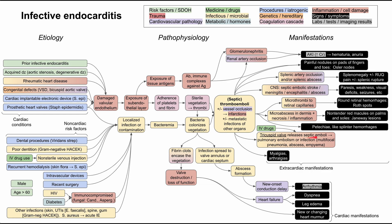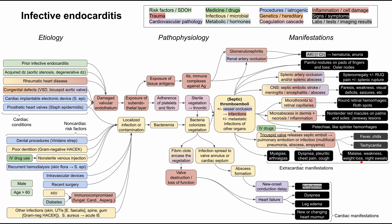The tricuspid valve releases septic emboli that can cause pulmonary embolism and pulmonary infection. This may present as multifocal pneumonia, with multiple lobes affected instead of just one. You can also have lung abscesses and lung empyema. Symptoms include shortness of breath, pleuritic chest pain, cough, malaise, weakness, weight loss, night sweats, fever, chills, and tachycardia.